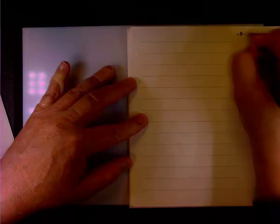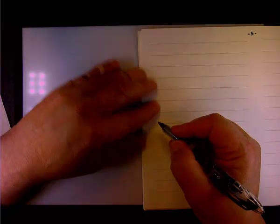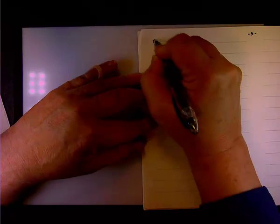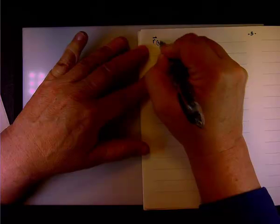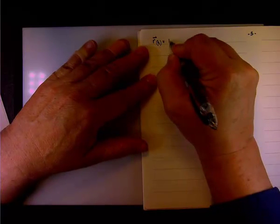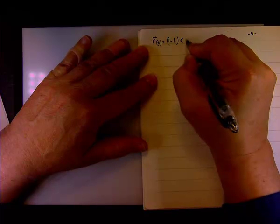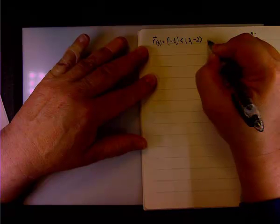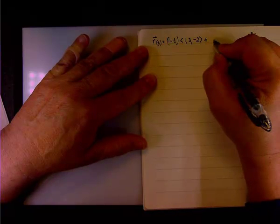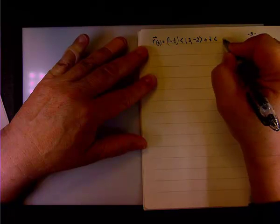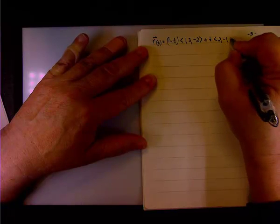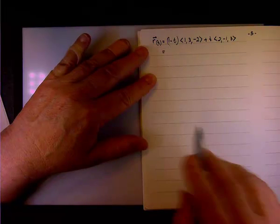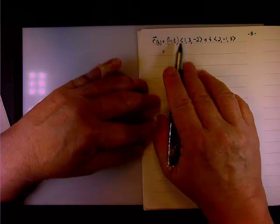So let me split the screen. So, let's spell R of T, spell it out, so it would be 1 minus T, and the first R0 is 1, 3, negative 2, and then we have T times 2, negative 1 and 3.